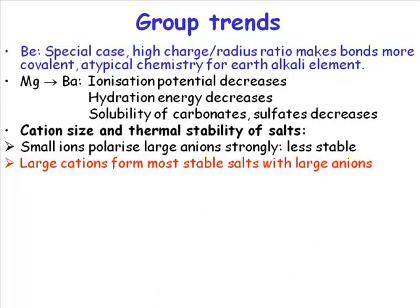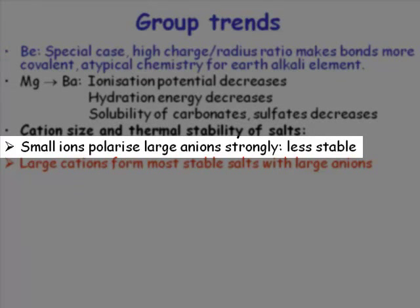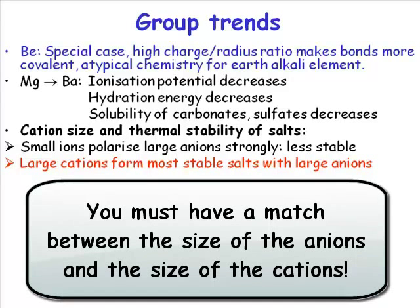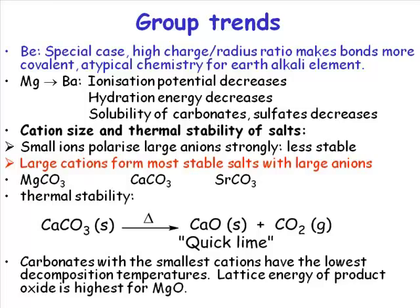Small ions like Be²⁺ polarize large anions, producing a species that is not very stable. One of the general points when predicting the stability of an ionic lattice is that you need a match between the size of the anions and the size of the cations — the most stable lattices are those where the anions and cations are fairly closely matched in size.